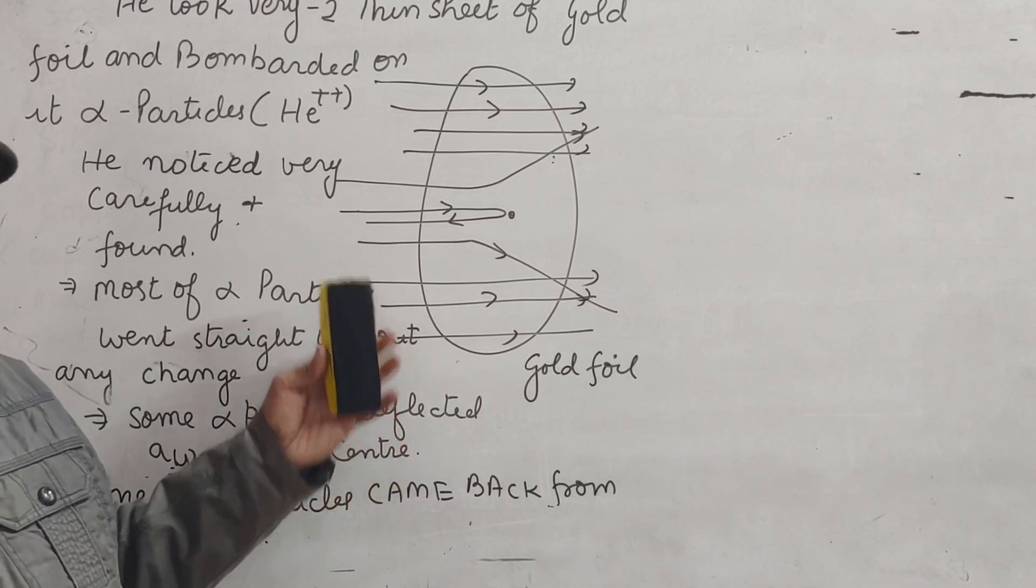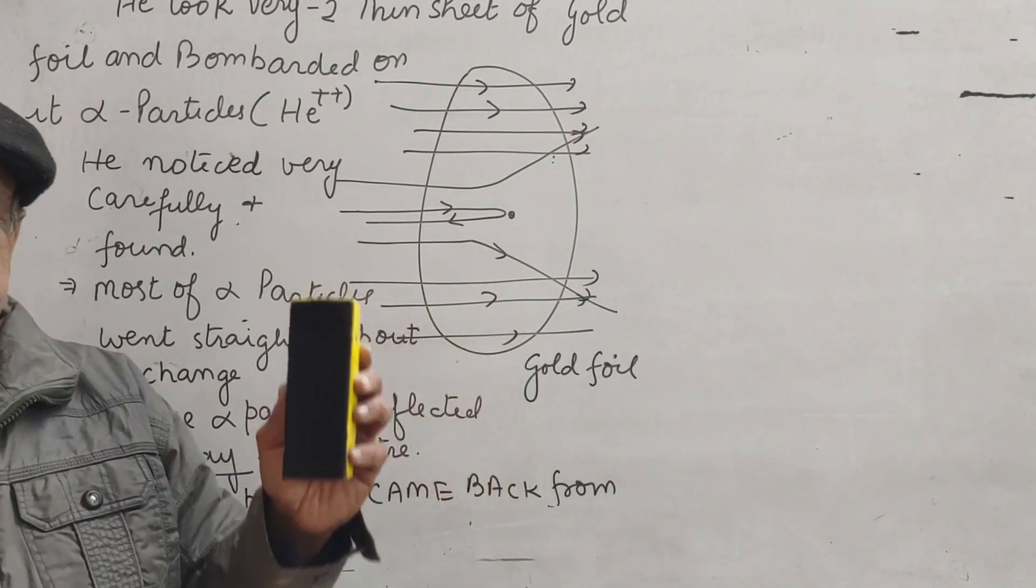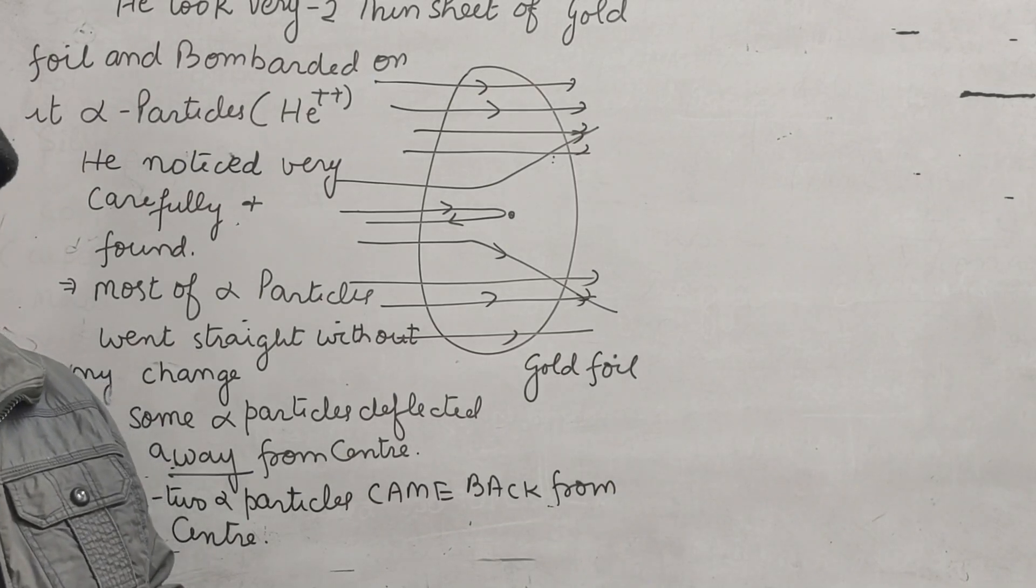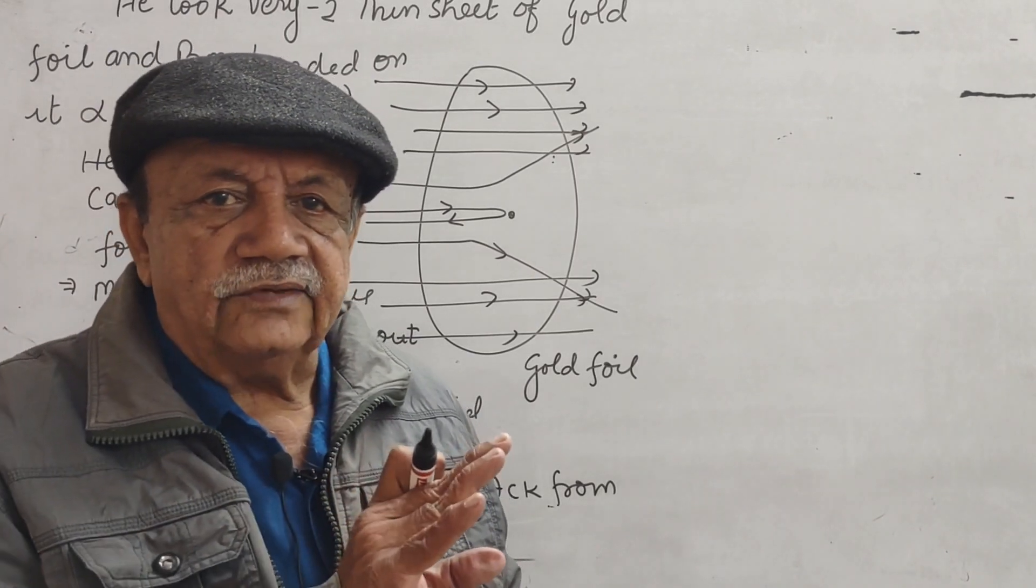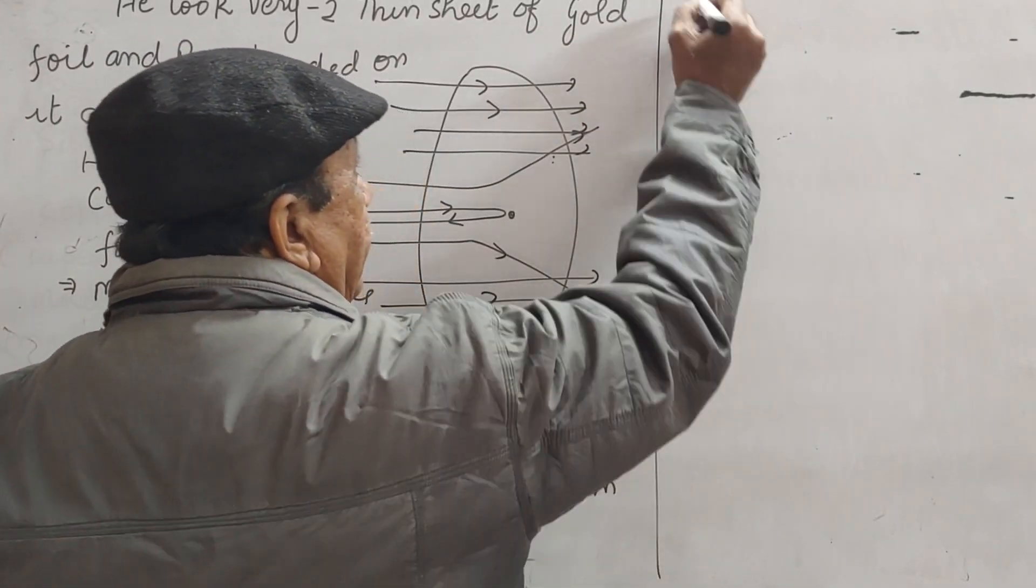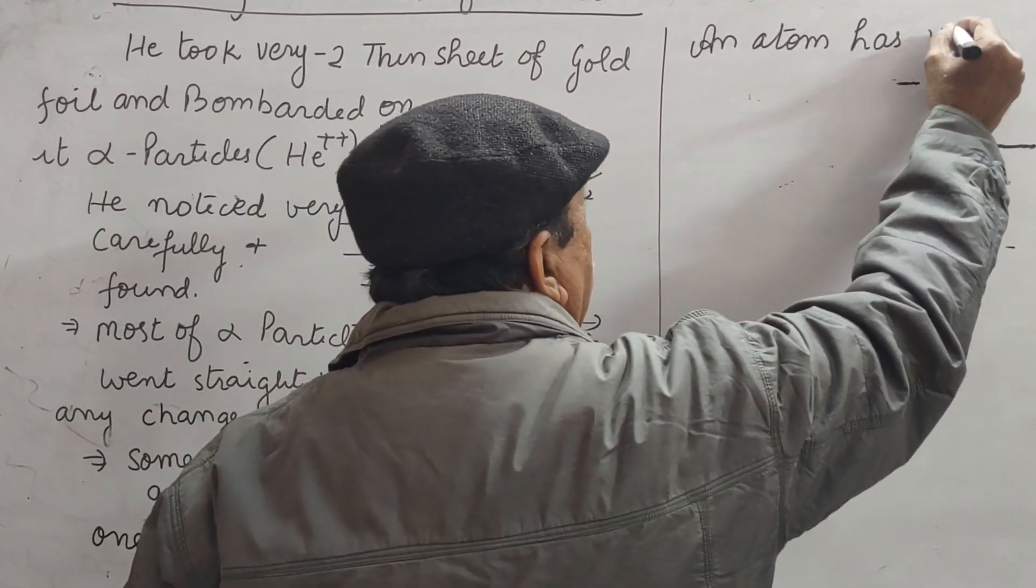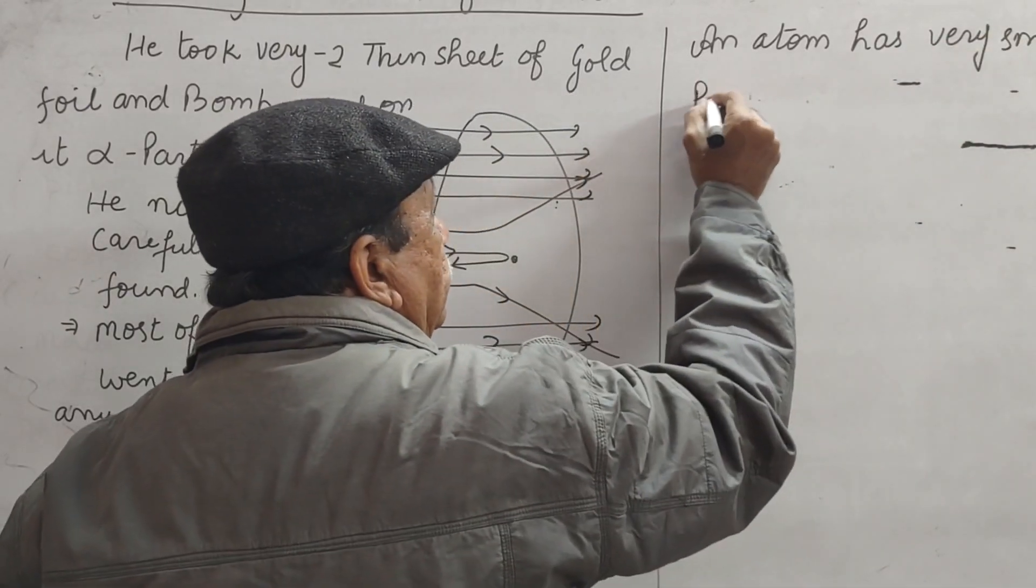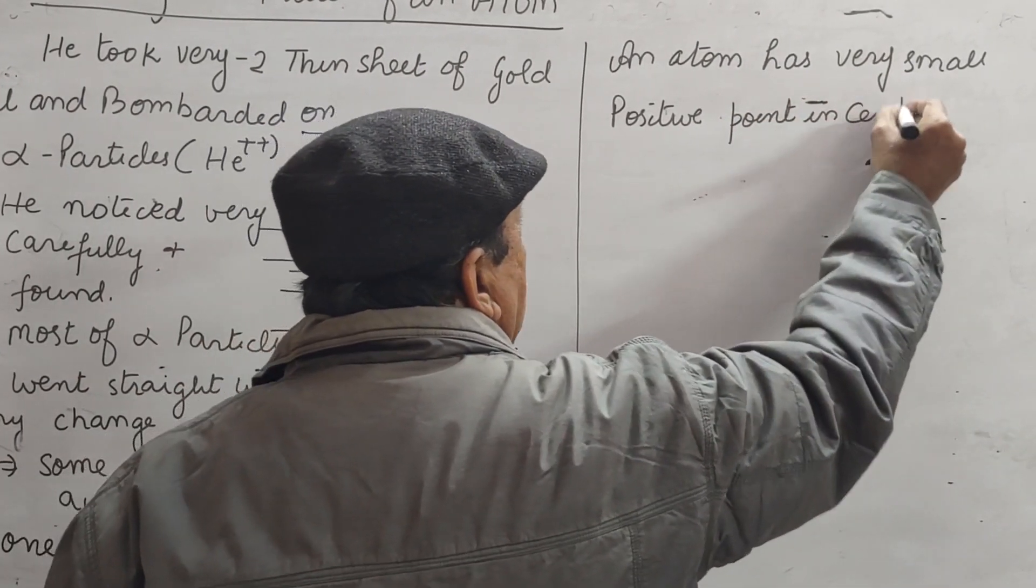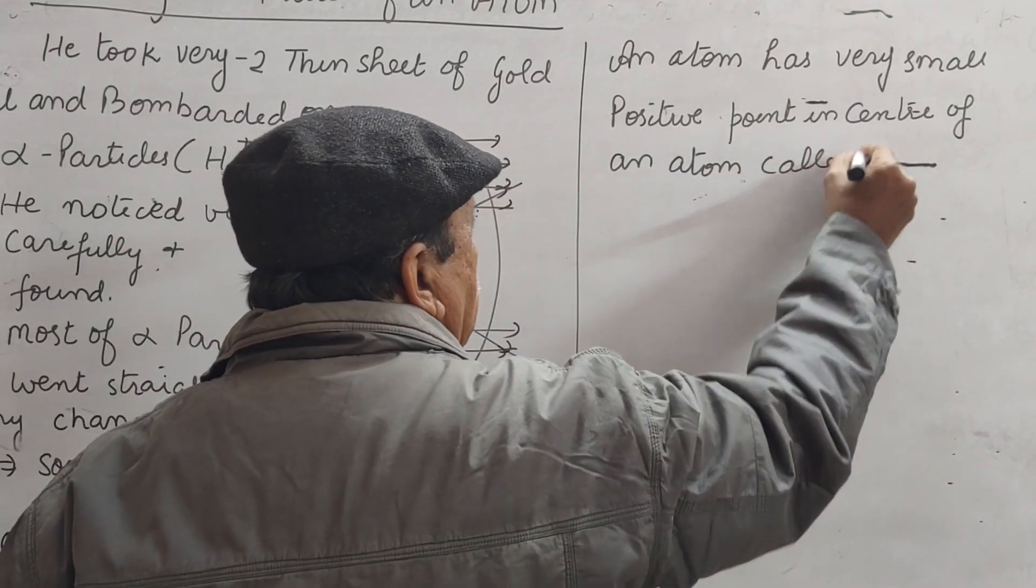From where Rutherford made some conclusions, made some new research in which he divided atoms into two parts. Before this atom cannot be divided, but here he gave some conclusion that an atom has very small positive point in center of an atom called Nucleus.